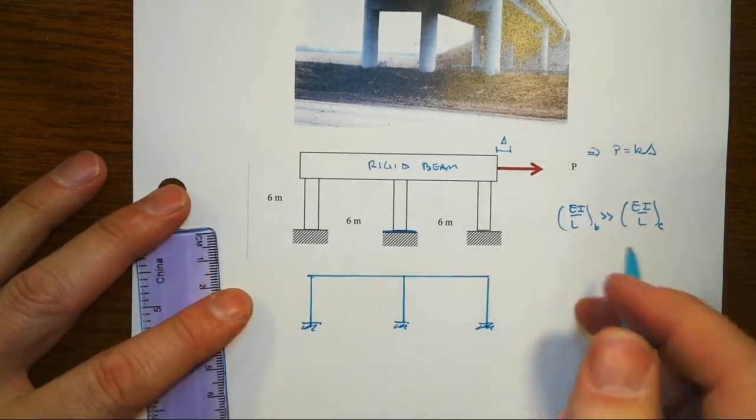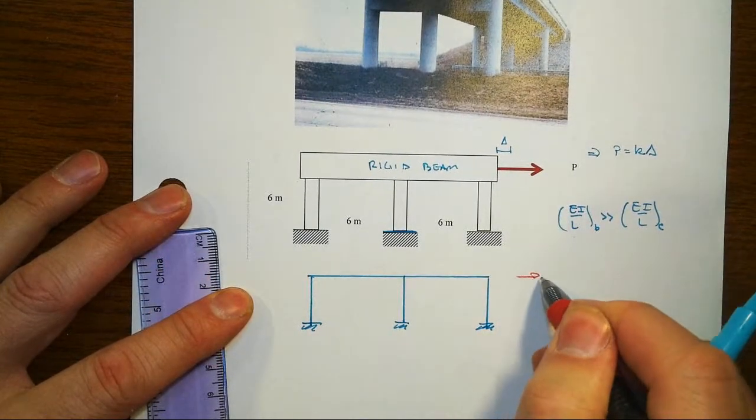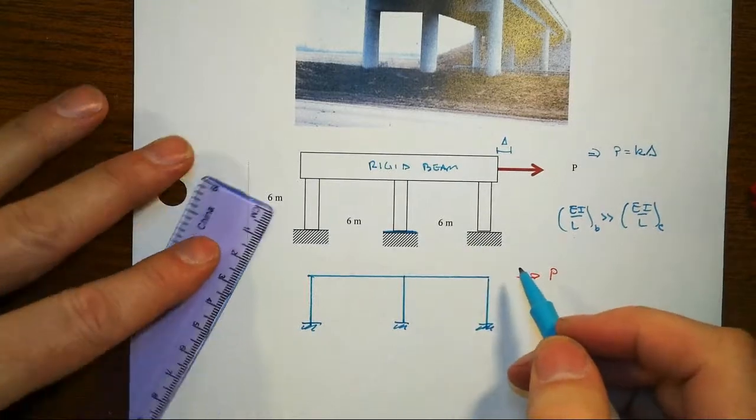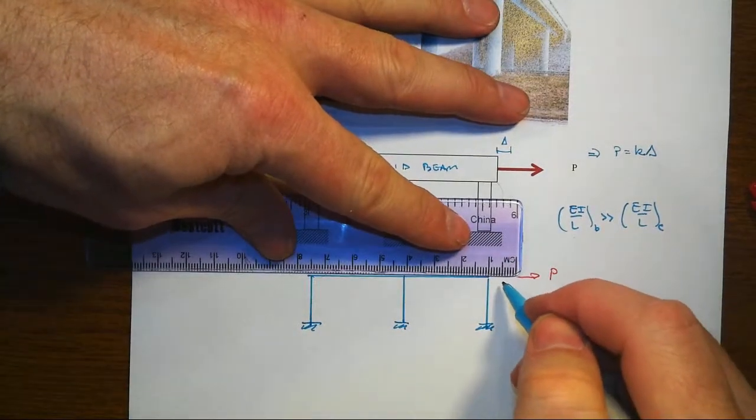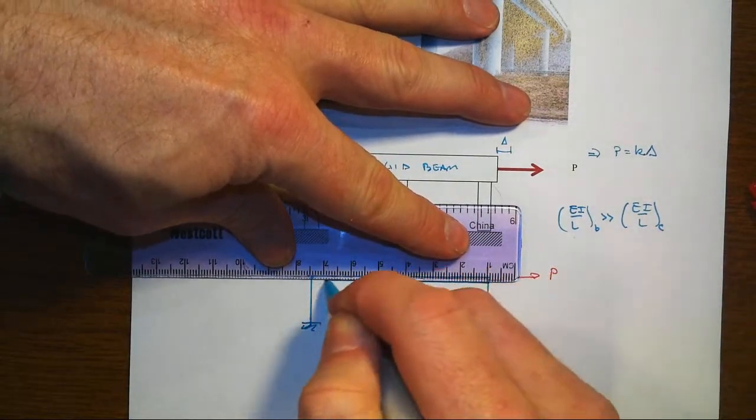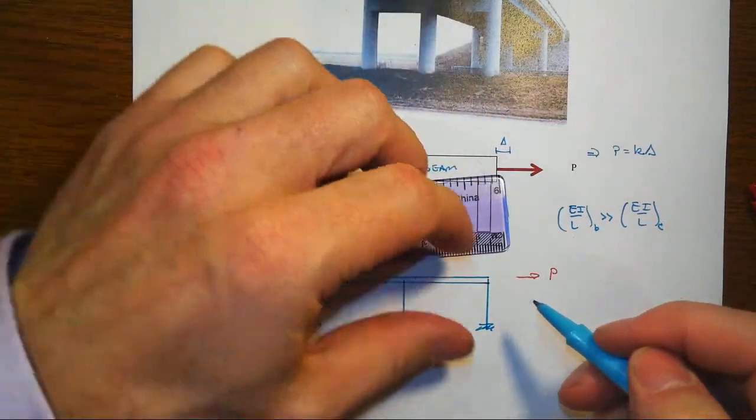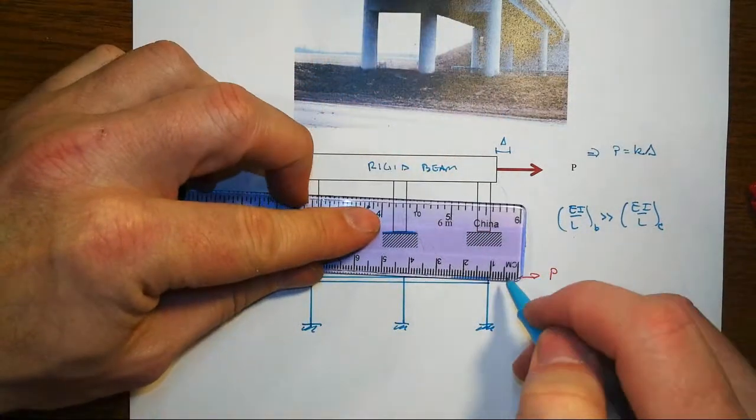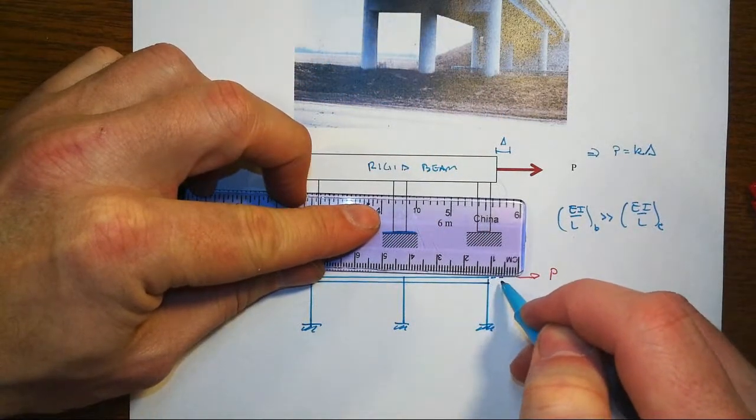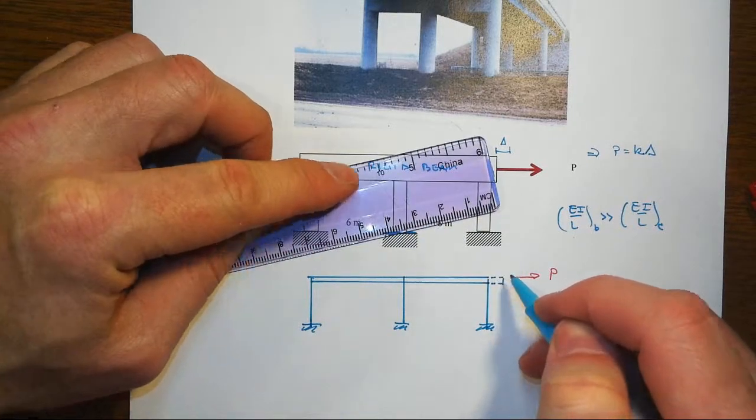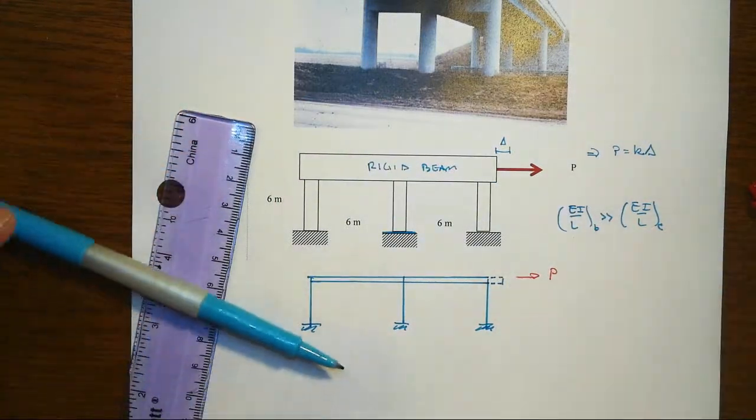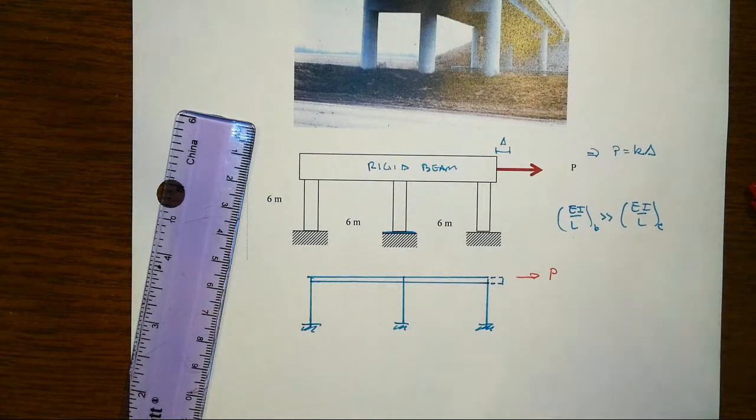So that means this thing slides over with the beam having no rotation, and we end up with reverse curvature in the columns such that it's fixed-fixed with sway in each and every case.